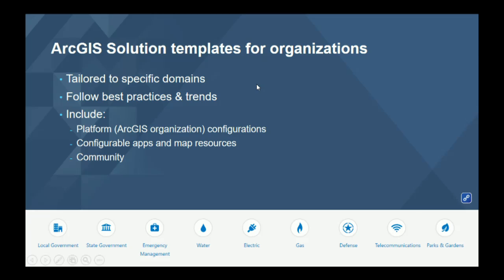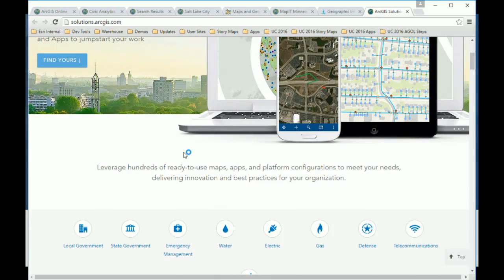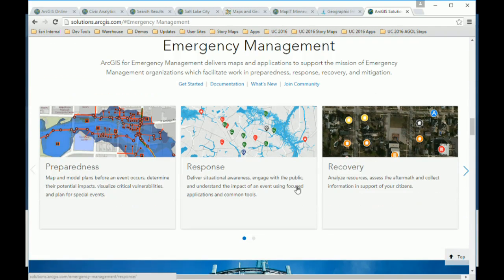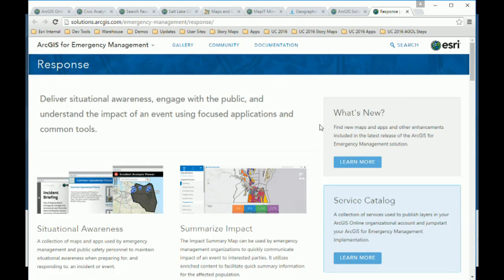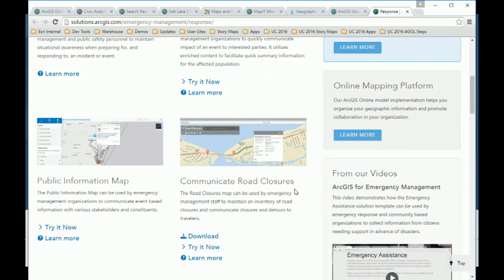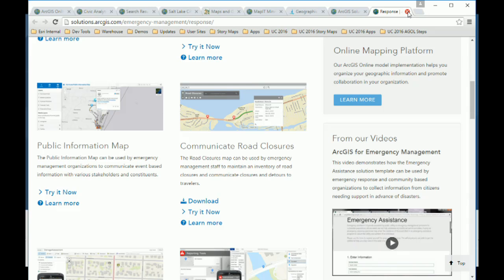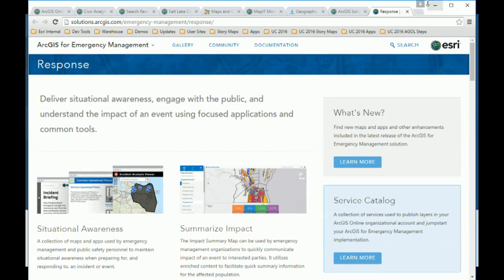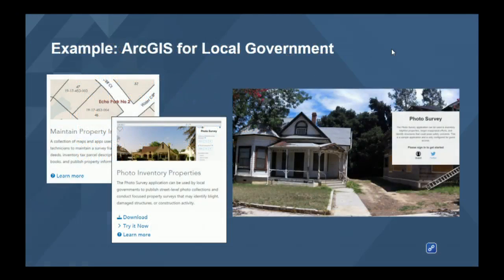For setting up your organization and building apps, look at the solution templates — they're industry- or domain-focused. These include configurable applications that are domain-tailored, suggested layouts for your organization, what kinds of groups to think about, and even graphics and logos you can use as you build your group. These are available at solutions.arcgis.com. Browse for your industry — whether it's emergency management or whatever — and you'll find app templates to download and lots of resources. Even if you've already started your organization, lots of people overlook these, so it's a great resource to revisit.